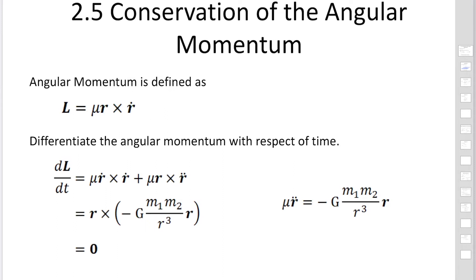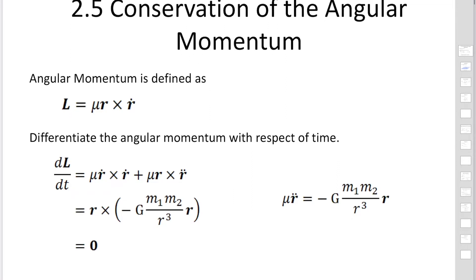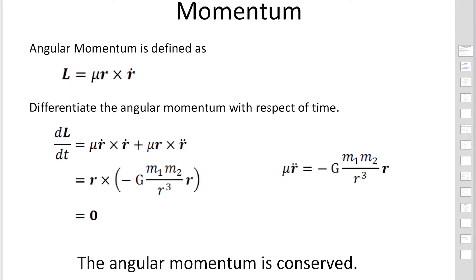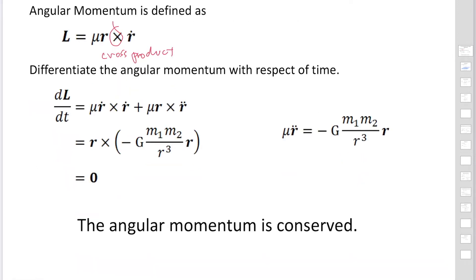In this section, we would like to derive the conservation of angular momentum. Angular momentum L is defined as mu r cross r-dot. Using the cross product, we find the derivative with respect to time. Substituting, we get mu r-dot cross r-dot plus mu r cross r-double-dot. The first term is a cross product of the same vector, so it becomes zero.